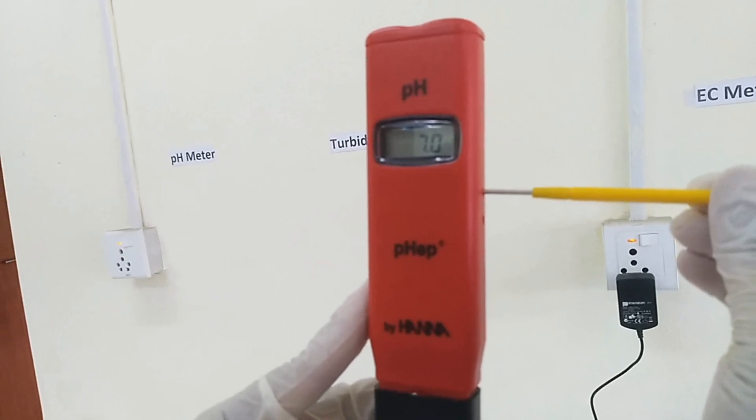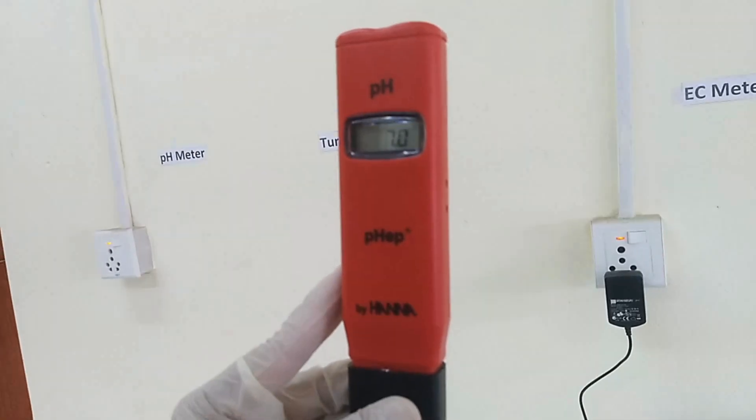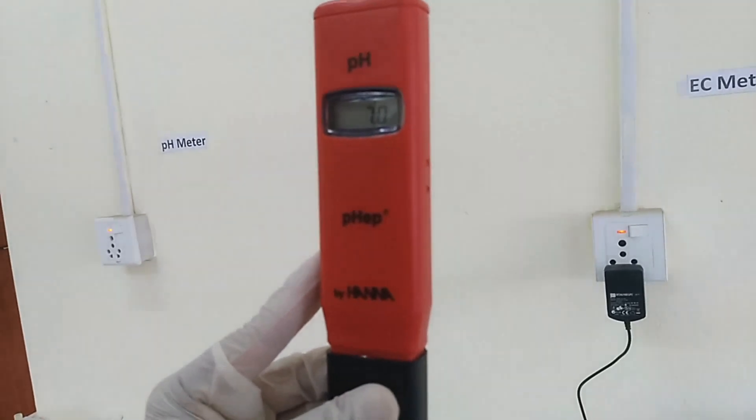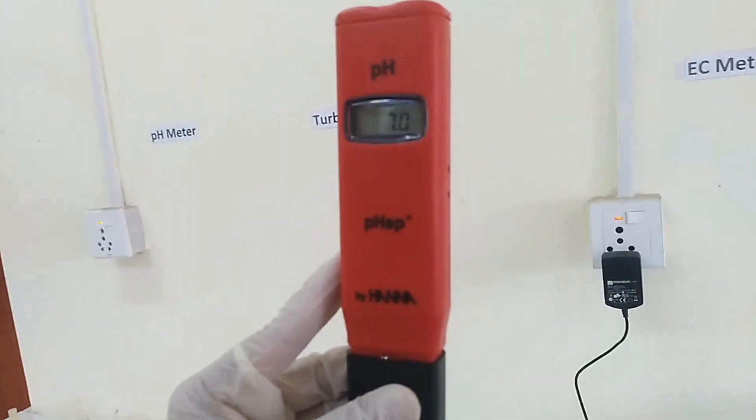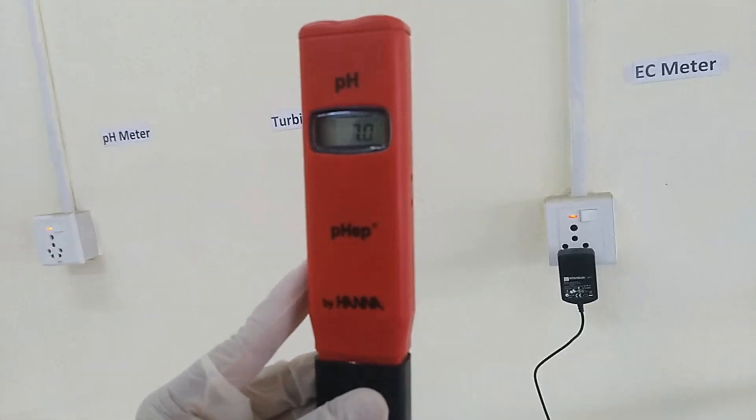So single-point calibration is completed. For more accurate result, do double-point calibration with buffer solution of pH 4.01.